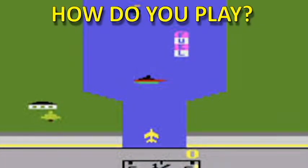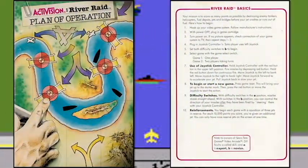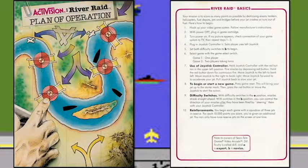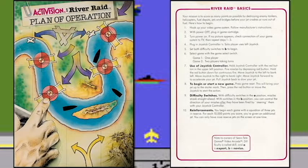So you're wondering how do you play this game? Let's go over the plan of operation. Your mission is to score as many points as possible by destroying enemy tankers, helicopters, fuel depots, jets, and bridges — before your jet crashes or runs out of fuel.